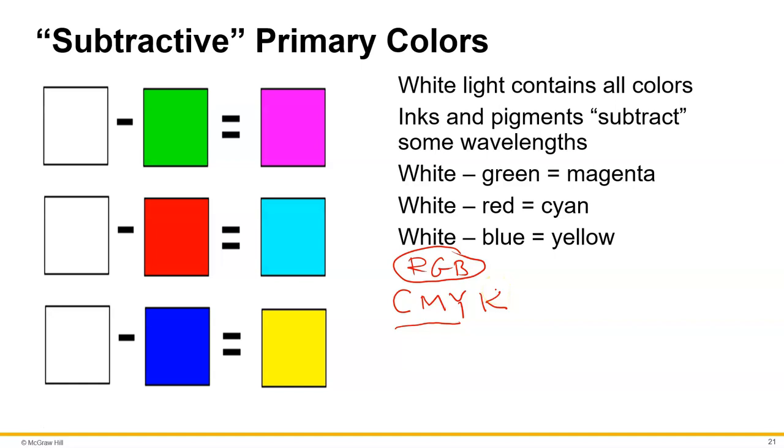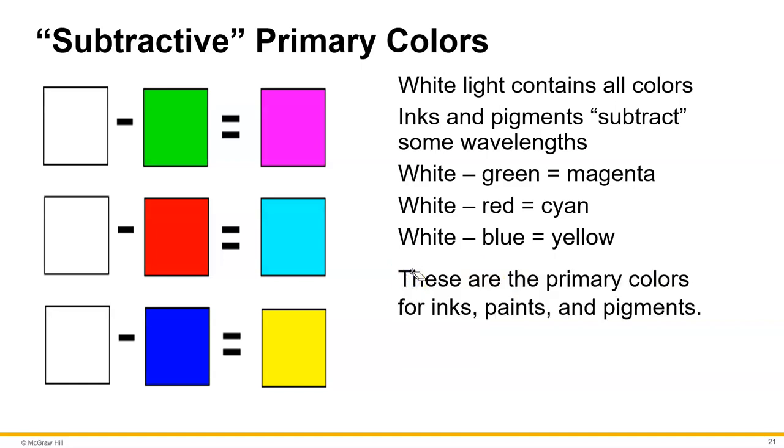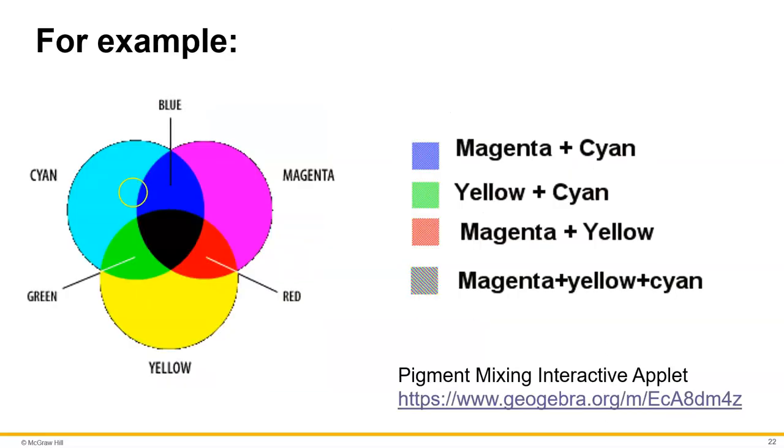Here's a overlapping for that. So for pigments, if you took a cyan, a magenta, and a yellow, and colored them all over each other, you would get black. But cyan plus magenta gives you blue, yellow plus cyan gives you green, and yellow plus magenta gives you red.